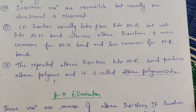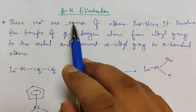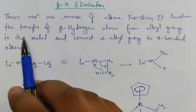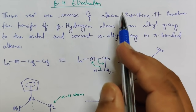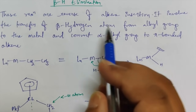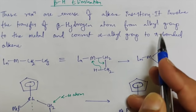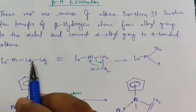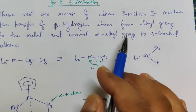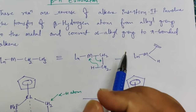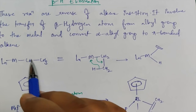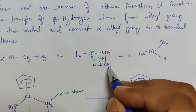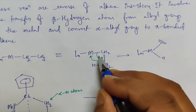Now let's talk about beta-hydride elimination. These reactions are the reverse of alkyl insertion or 1,2 migratory insertion. It involves transfer of a beta hydrogen atom from the alkyl group to the metal, converting the sigma-bonded alkyl group to a pi-bonded alkene. In 1,2 migratory insertion, pi-coordinated alkene was converted to a sigma-bonded alkyl group — beta-hydride elimination is exactly the reverse of that.